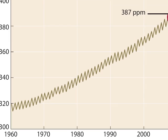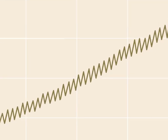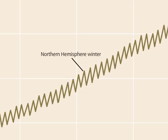The zigzag pattern reflects the seasons. During the Northern Hemisphere winter, metabolism exceeds photosynthesis, resulting in a net release of carbon dioxide into the atmosphere. In the summer, photosynthesis exceeds metabolism, and relatively more carbon dioxide is taken up by plants.